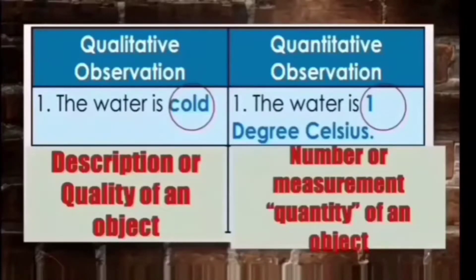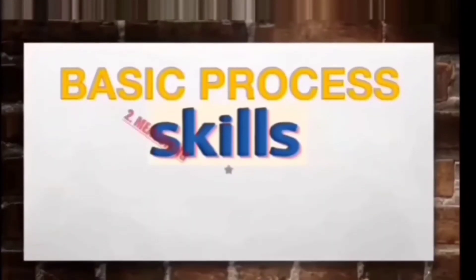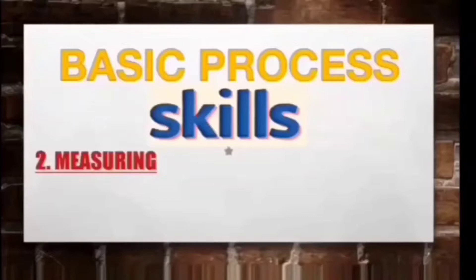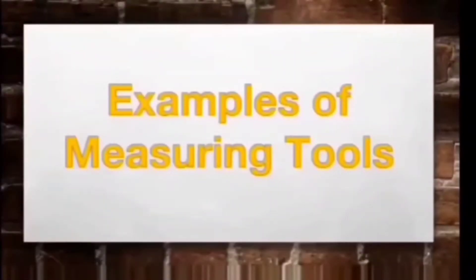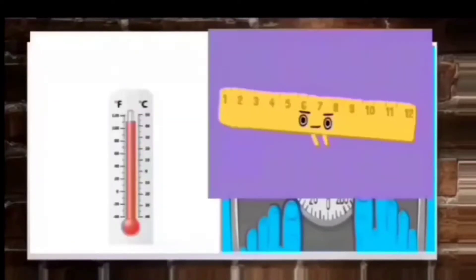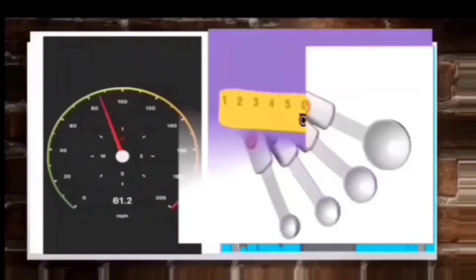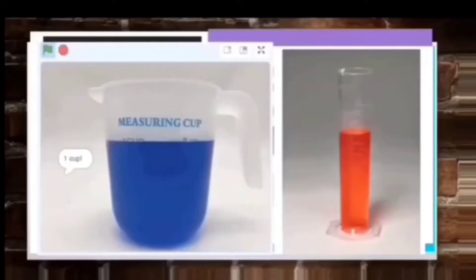We will be discussing the second process skill. For us to get the exact measurement of an object, we need to use different measuring tools. Some of these are the meter, weighing scale, thermometer, ruler, speedometer, measuring spoons, measuring cups, graduated cylinder, and beaker.